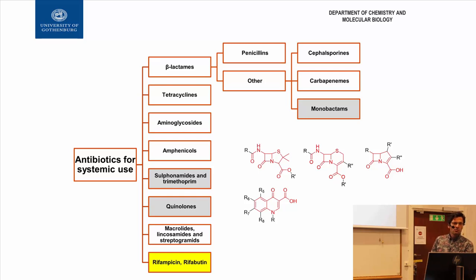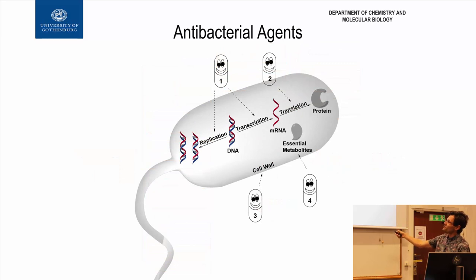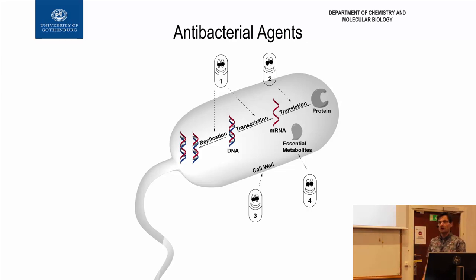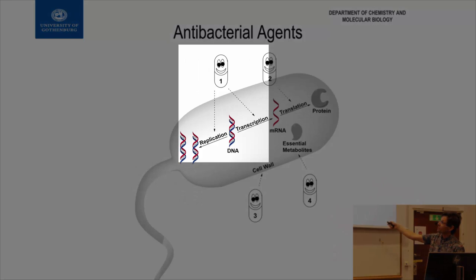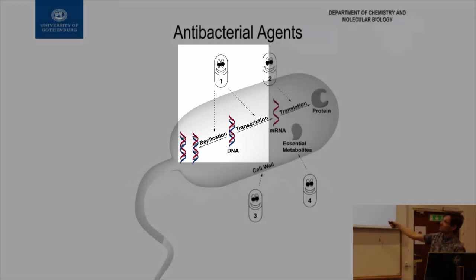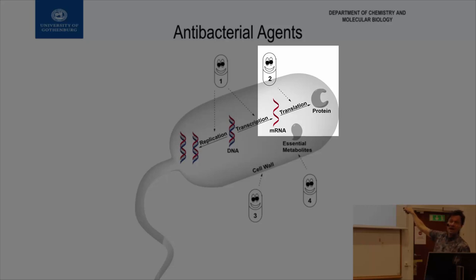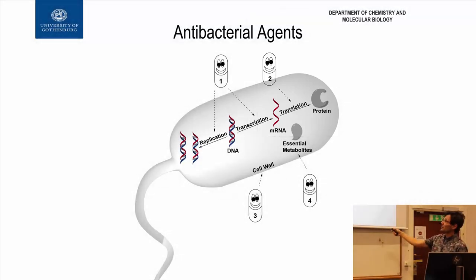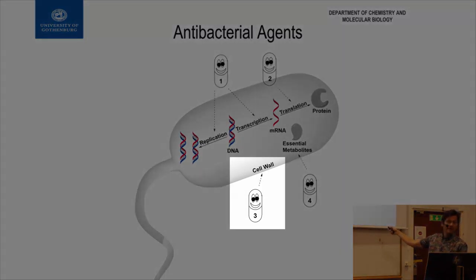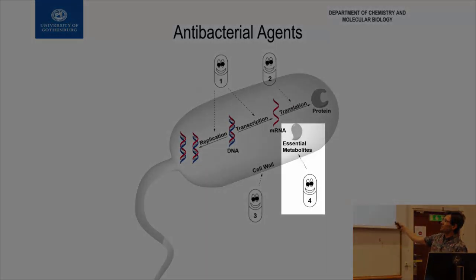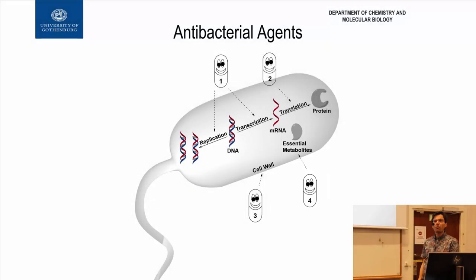What do these antibiotics do to bacteria? This is a schematic illustration of bacteria, and basically all the classes on my previous slide do one of four mechanisms. They either interfere with replication or transcription — replication means copying DNA, transcription means making mRNA, so that works on the nucleic acid level. Some drugs interfere with translation, how mRNA is converted to a protein. A third class does something with the cell wall. And the fourth class interferes with essential metabolites. Those are the four main mechanisms.